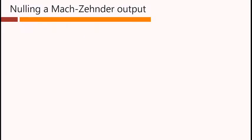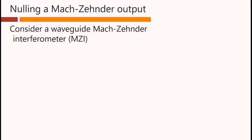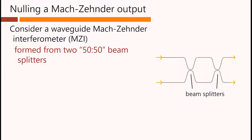To start, we should remind ourselves how we null out a port in an interferometer. Consider a waveguide Mach-Zehnder interferometer, formed from two 50-50 beam splitters.